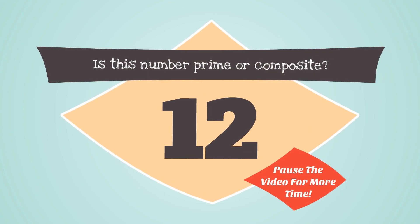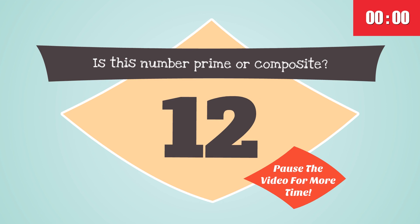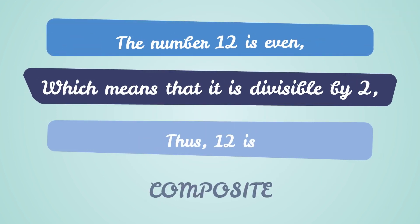Is this number prime or composite? The number 12. Pause the video for more time on this question. The number 12 is even, which means that it is divisible by 2, thus 12 is composite because it has a factor other than 1 and the number 12.